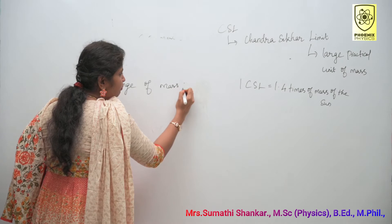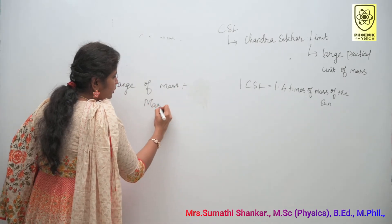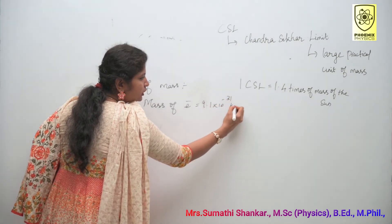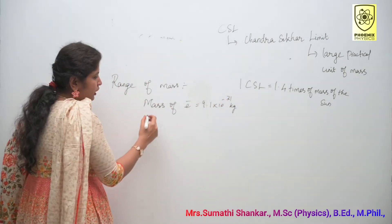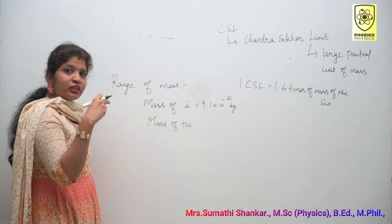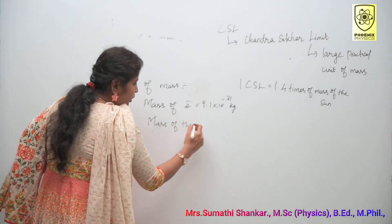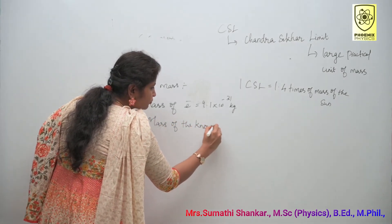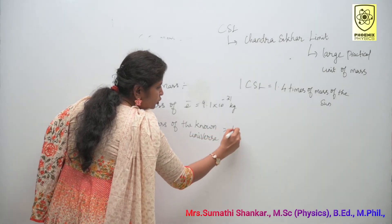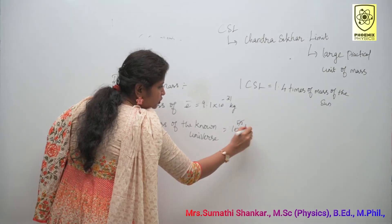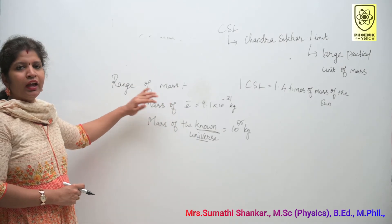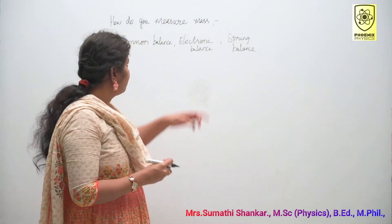The mass of the electron is 9.1 × 10⁻³¹ kilogram. And the mass of the known universe — I say known universe because the universe is infinite — is 10⁵⁵ kg. In between, so many values are given. Please go through the tabular column.